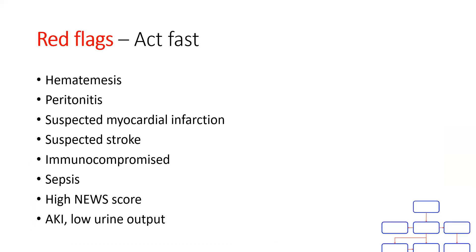We should also be able to identify red flags in a timely manner. Signs and symptoms suggestive of upper GI bleeding, acute surgical abdomen, and significant cardiac or intracranial pathologies should be recognized as soon as possible. People with immunosuppression are vulnerable to uncommon infections, and serious implications can often result. We should also pay attention to the adverse outcomes related to vomiting, such as dehydration, shock, and electrolyte imbalance, and the direct effects of the underlying etiology as well.